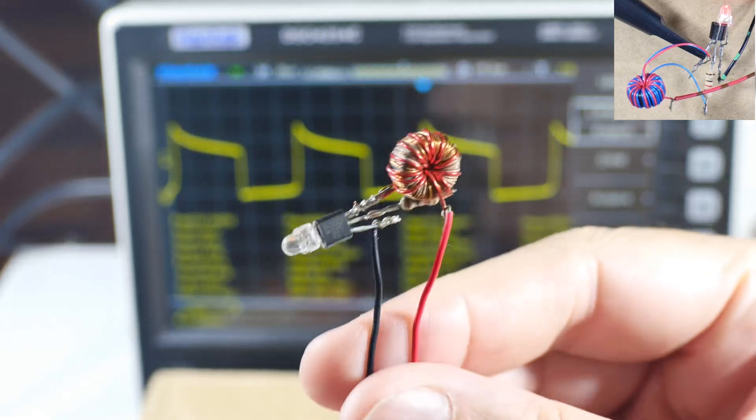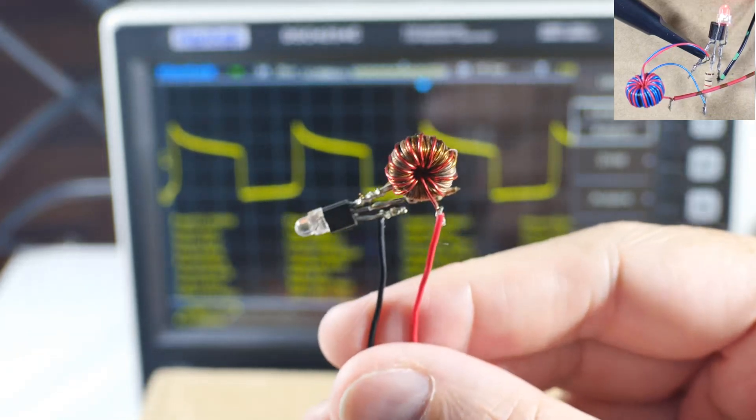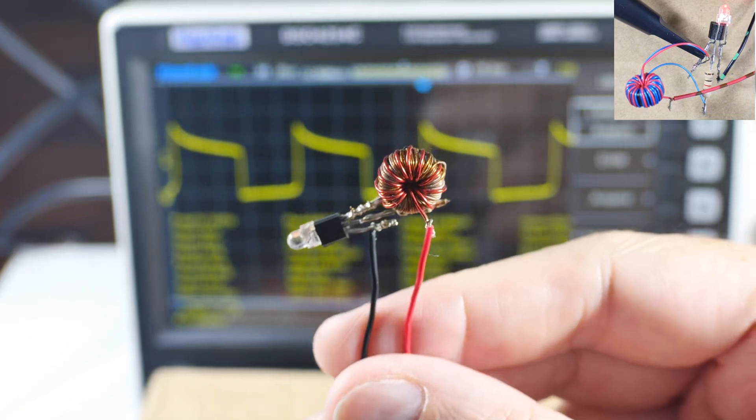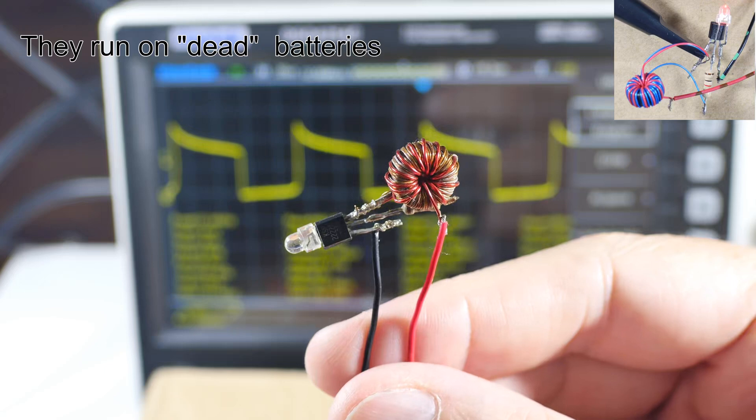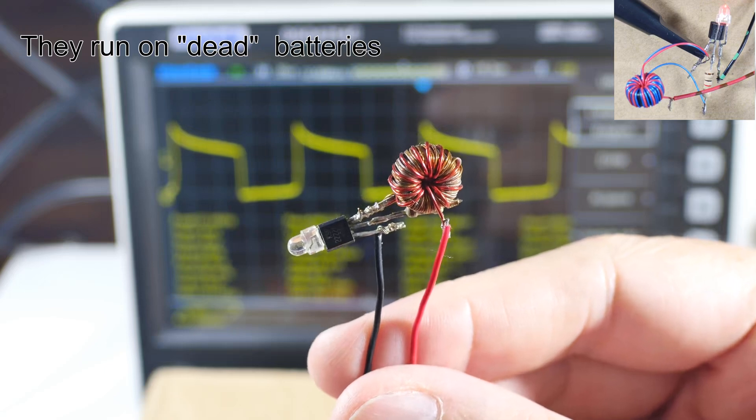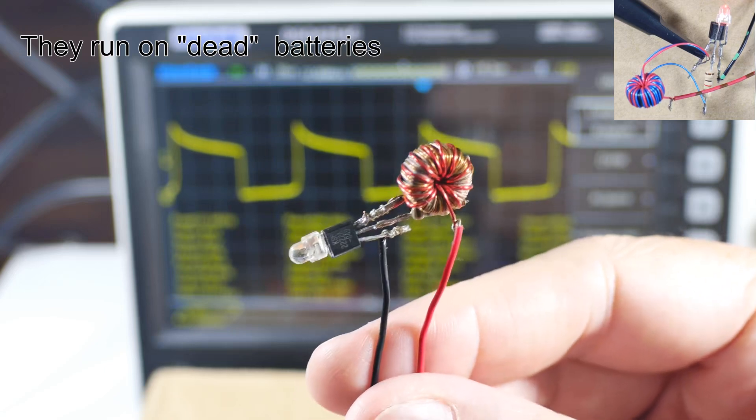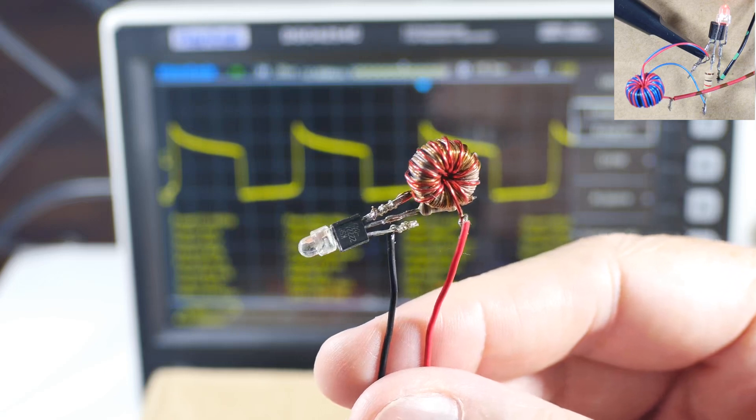This is a Joule Thief. I've got several videos on them and they are a device that is made to use the last little bit of energy from say a AAA or AA battery. Typically they run on one volt or less because it is a dying battery.